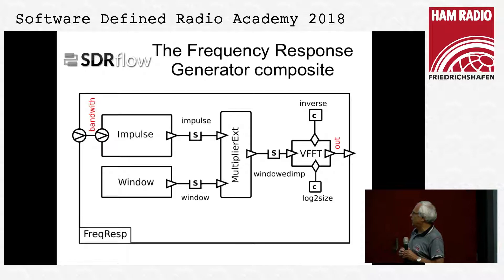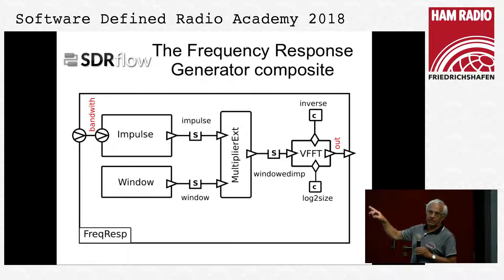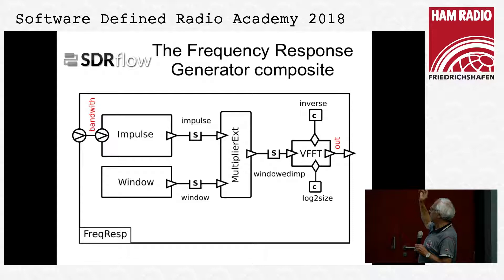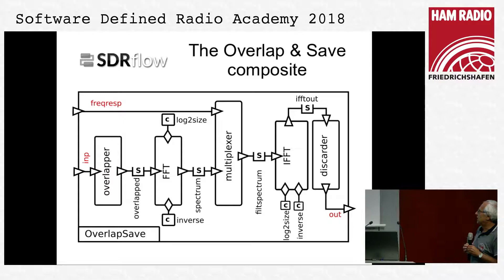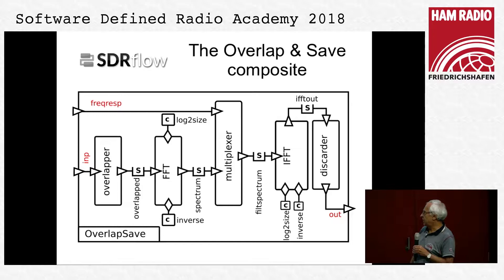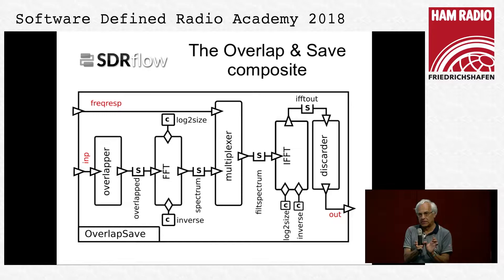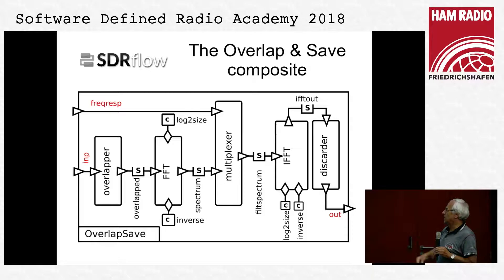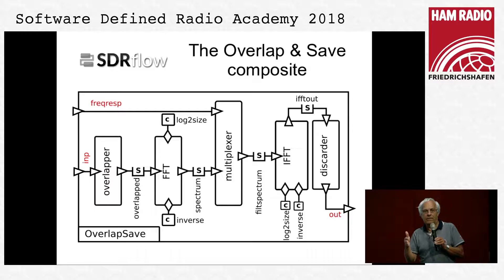The frequency response generator first generates the impulse response of the filter, then generates a window function, multiplies these two streams, and the result of the multiplication will be Fourier transformed. The output of the Fourier transformation is the frequency response of the filter. The overlap-and-save method begins with the overlap primitive, which concatenates two blocks of samples. This large block will be Fourier transformed, multiplied by the frequency response, inverse Fourier transformed, and half of the result of the inverse Fourier transform will be discarded.